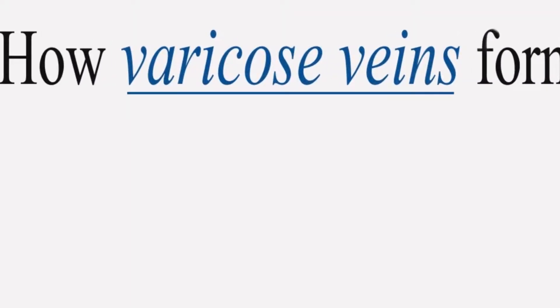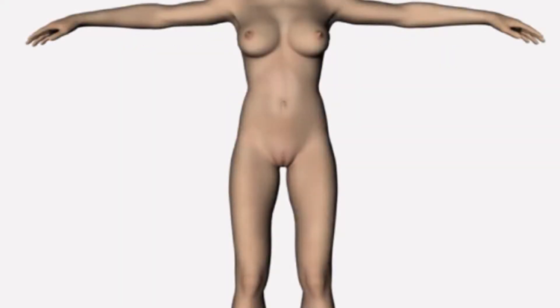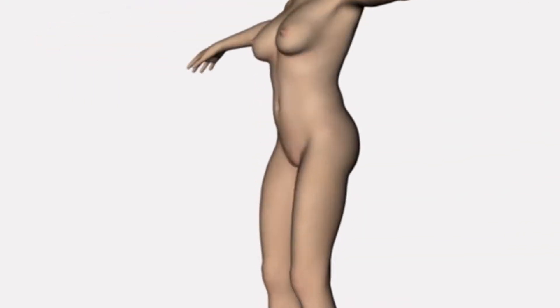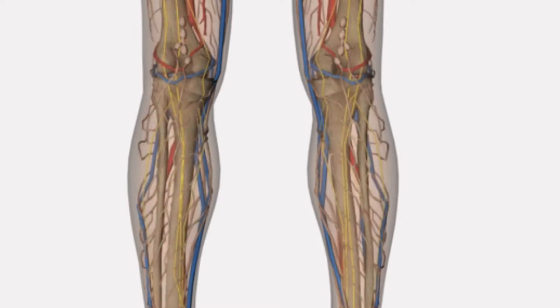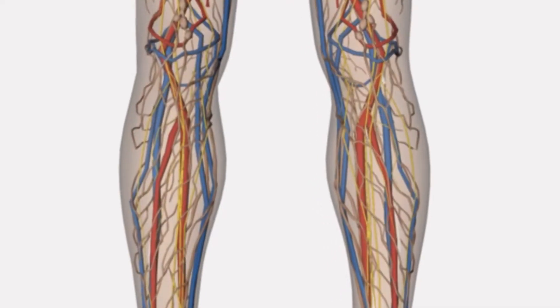Varicose veins are a common condition affecting both men and women. Varicose veins are swollen veins which show through the skin. They're a blue or purplish color and are usually found on the feet or legs, particularly around the calves.